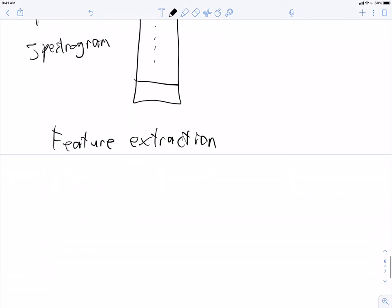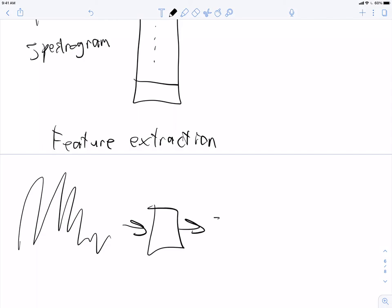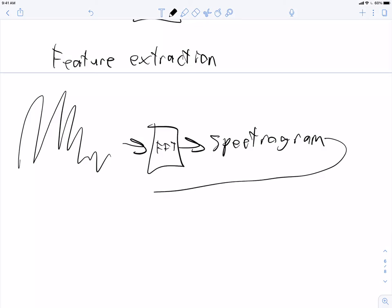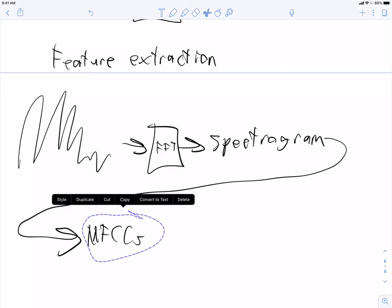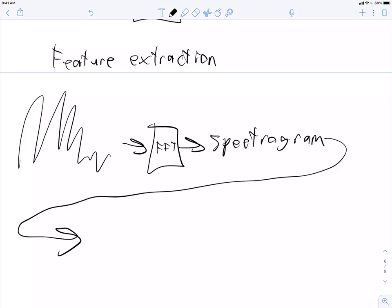We're almost there. We've almost got all of the features that we need. Remember what we're doing is called feature extraction. And feature extraction is going to go from complicated sound wave to spectrogram using a fast Fourier transform, which you don't need to know the technical details of. And then from a spectrogram to MFCCs, which are the technical term for this list of features.